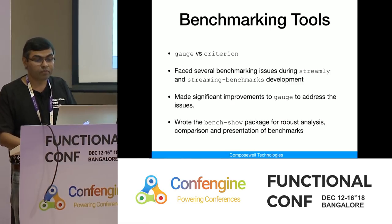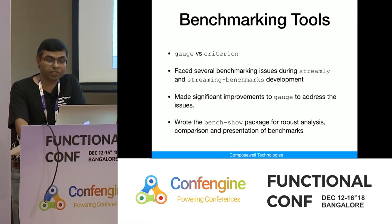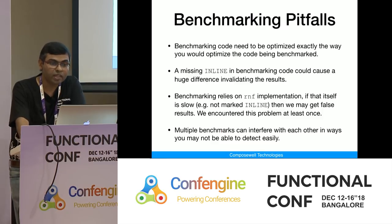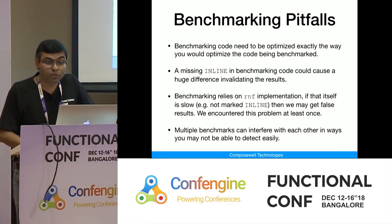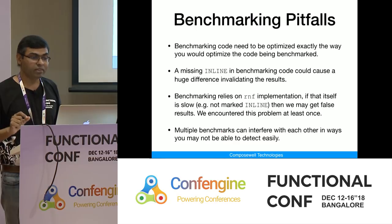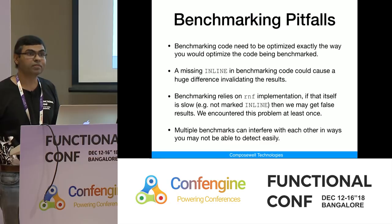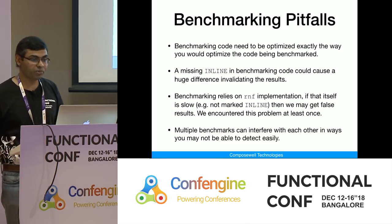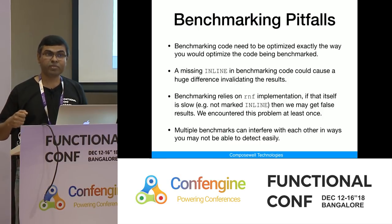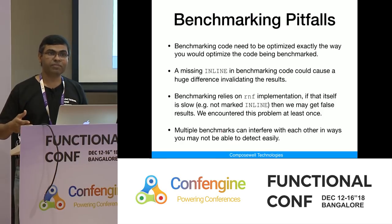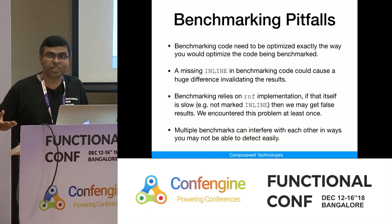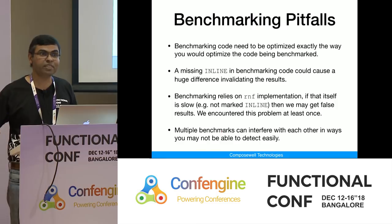We faced several benchmarking issues during Streamly development and made significant improvements to Gauge to address those issues. We also wrote the bench-show package to be able to scale analyzing benchmarks. What are the pitfalls? The benchmarking code needs to be optimized exactly the same way as your regular code — otherwise your benchmarks will be invalid. In one case a missing inline caused the benchmark to run very slow. Also, the NFData implementation of a particular data structure was slow and not inlined — if the implementation of reduction itself is not fast, it looks like the code is very slow when actually the measurement is slow.